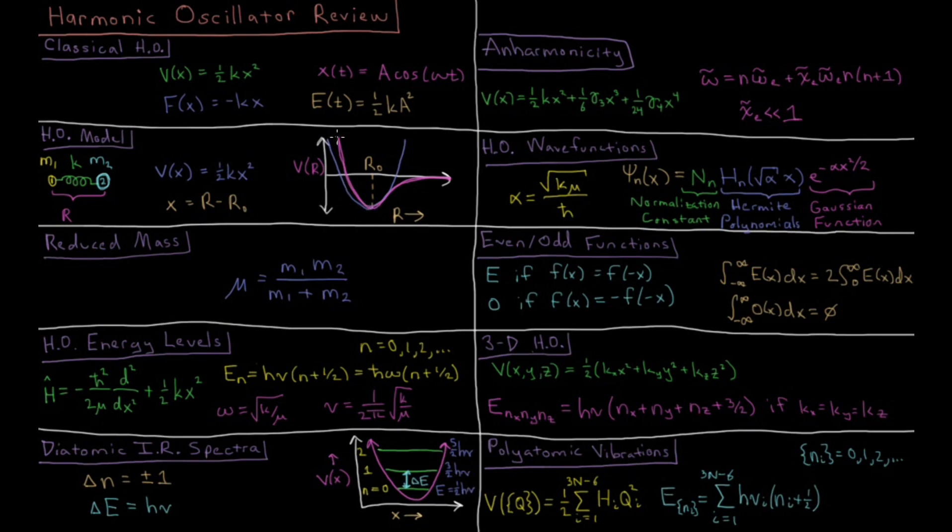Vibrating diatomic molecules have some potential which is repulsive at short range when the two atoms are very close, and it also gets higher in energy at long range when the atoms are farther away from each other, tending towards some zero at infinite separation.